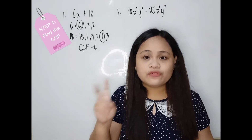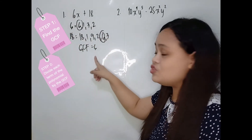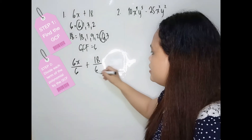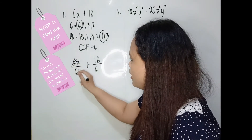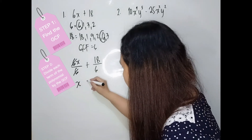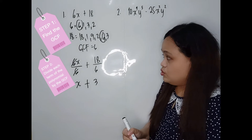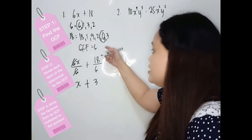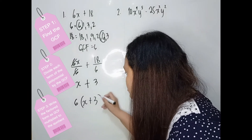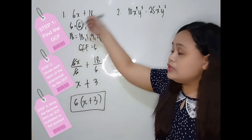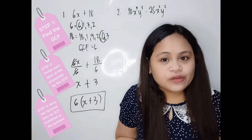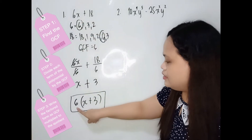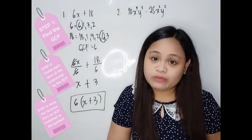Step 2: divide each term in the polynomial by the GCF. So 6x divided by 6 gives us x, and 18 divided by 6 gives us 3. Step 3: get the factored form — it is the GCF multiplied by the quotient. So the factored form is 6(x + 3). To check your work, distribute the GCF: 6 times x is 6x, and 6 times 3 is 18. That gives us 6x + 18, confirming our factored form is correct.